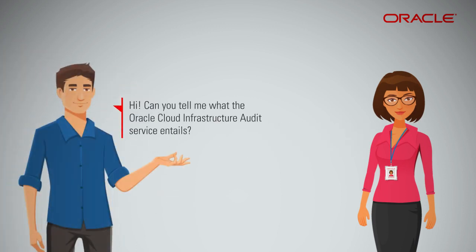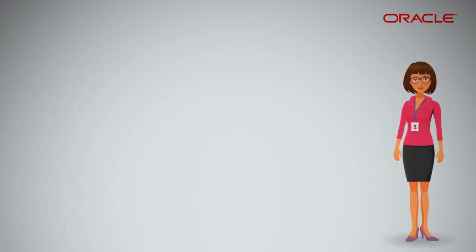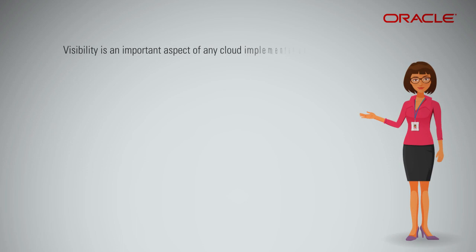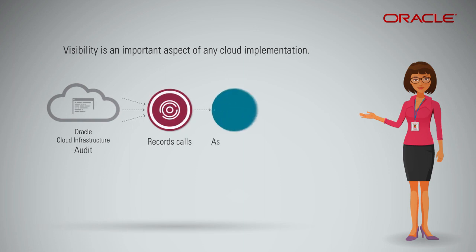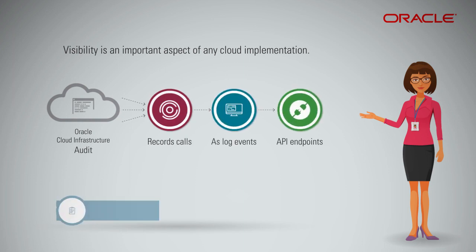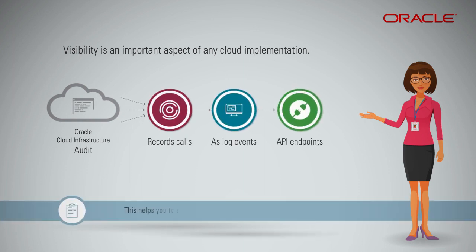Can you tell me what the Oracle Cloud Infrastructure Audit Service entails? Visibility is an important aspect of any cloud implementation. The Oracle Cloud Infrastructure Audit Service automatically records calls as log events to all supported API endpoints. This helps you to easily see and understand what is happening in your tenancy.